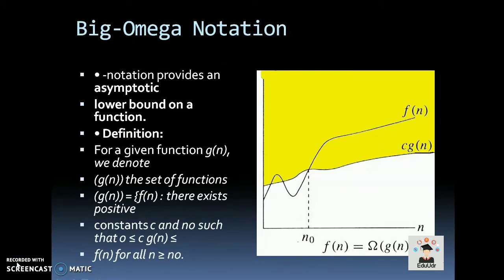Big Omega notation provides an asymptotic lower bound of a function. The definition: for a given function g(n), we denote Ω(g(n)) as the set of functions f(n) where there exists a positive constant c and n0 such that 0 ≤ c·g(n) ≤ f(n) for all n ≥ n0. In simple words, if we have the function f(n), it will not go less than c·g(n). It means f(n) will always be greater than c·g(n) where c is a constant.